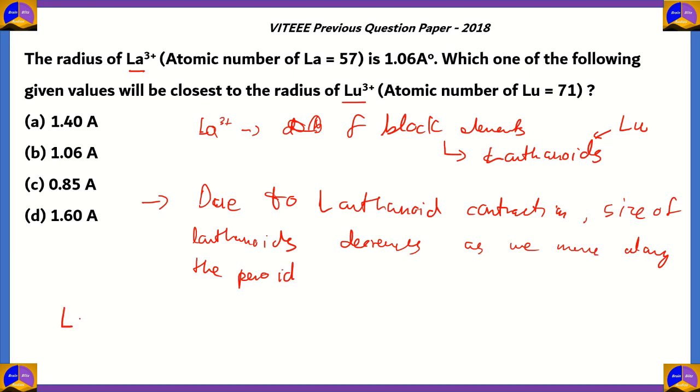Here we're asked to find the atomic radius of lutetium. Lutetium is the last element of the lanthanoids—after lanthanum, cerium, praseodymium, neodymium, promethium, samarium, europium, gadolinium, terbium, and then a couple of other elements. Lutetium is the final element among the lanthanoid section. Therefore, it will be the smallest among lanthanoids.